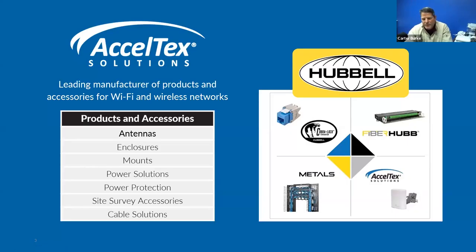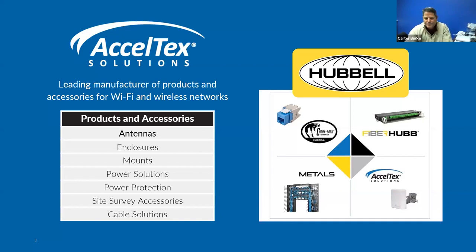Matt wanted me to take a few minutes and talk about who Exceltex is so you know where we fit in the industry. Our focus is looking at the different radio manufacturers and figuring out where we can provide gaps in their line to complete the whole solution. Obviously today we're going to focus on antennas, which is by far the biggest part of our business, as well as mounting. But we do a lot around enclosures for environmental aesthetics, security, power solutions, site survey tools, battery packs, cable solutions, and skinning — where we take products and hide or wrap them to make your Wi-Fi disguised.